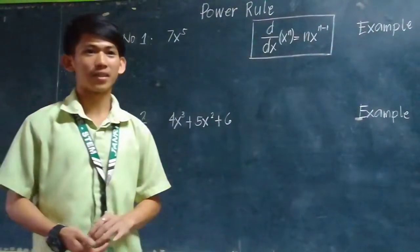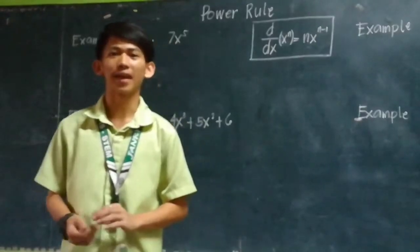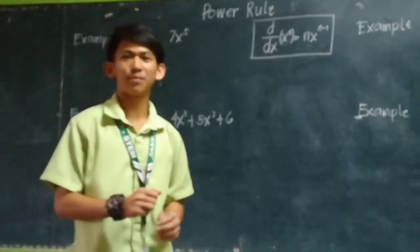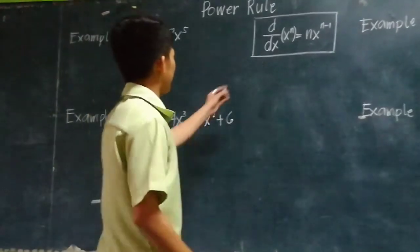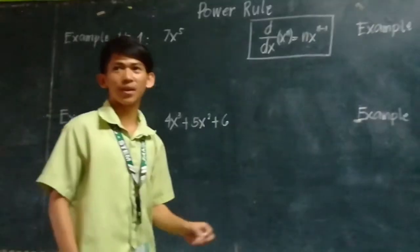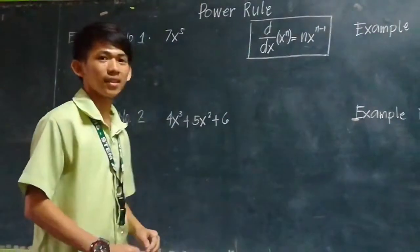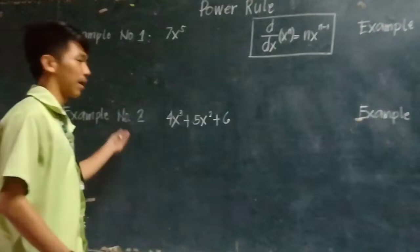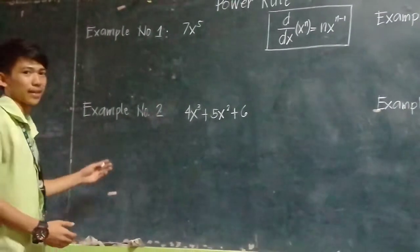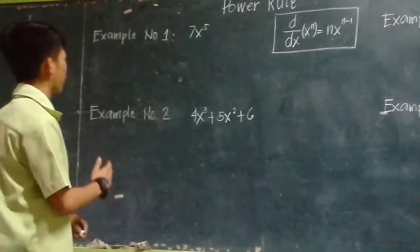The power rule is a fairly simple rule that helps define the derivatives of a variable to a power. The formula is: d/dx of x^n equals nx^(n-1). Here are some examples of the power rule in derivatives. Example number one is 7x^5.